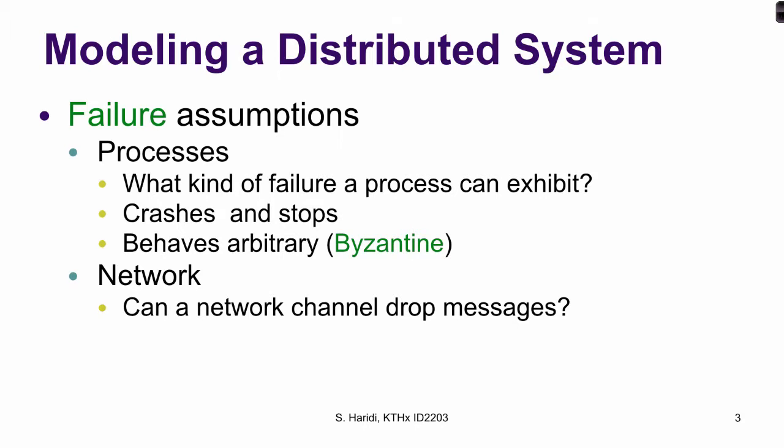We need also to specify failure assumptions — failure assumptions about processes. So what kind of failure can a process exhibit? Is it a crash failure, like a process crashes and stops? Or does the process behave in an arbitrary way, for example omitting messages or sending messages that are not part of the protocol?